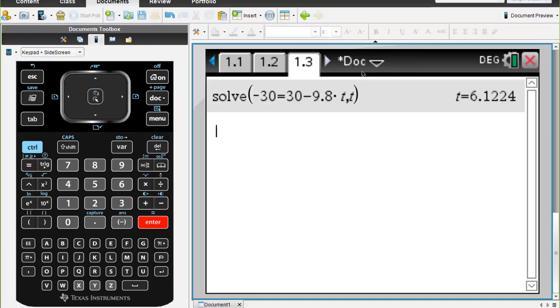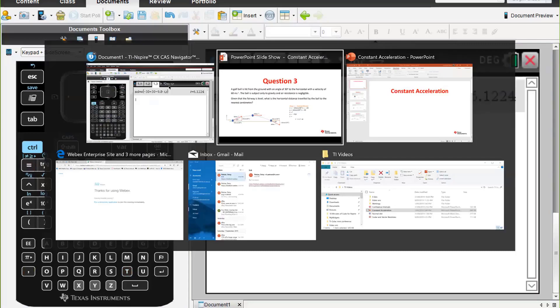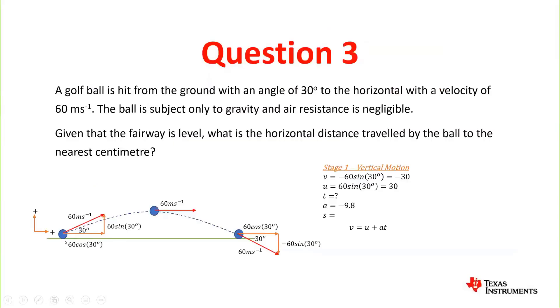We'll just go back and have a look at our diagram. So it took 6.12 seconds for the ball to reach the ground. We're looking at the vertical directions—this time now we have to look at the horizontal stage of motion because the vertical does not affect the horizontal motion. So in this time...